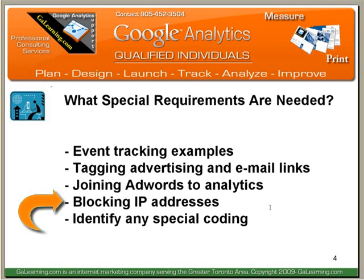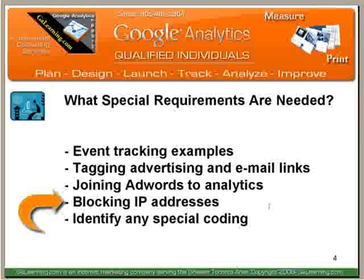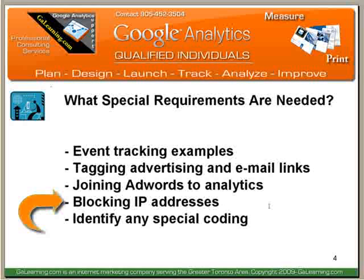For example, the owner of the website and all of your staff — it could be a couple hundred people on a network — you really wouldn't want them showing up as visitors when they land on your own website. So what we do is block IP addresses and IP address ranges for corporations, so that nobody shows up in your analytic data that should not be there.